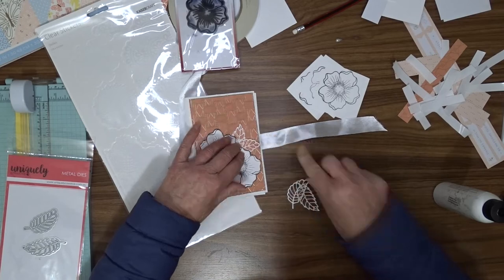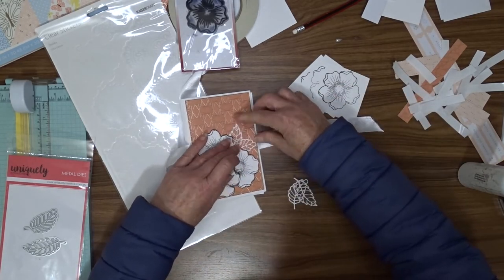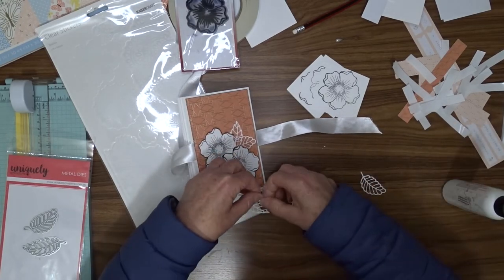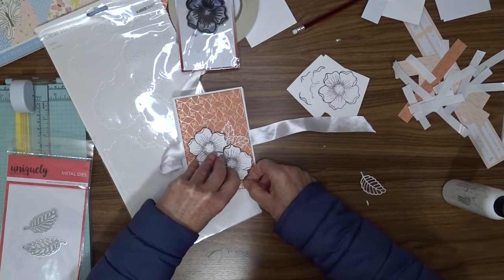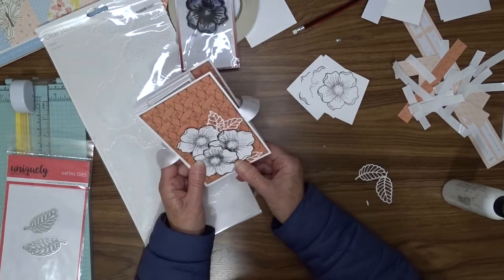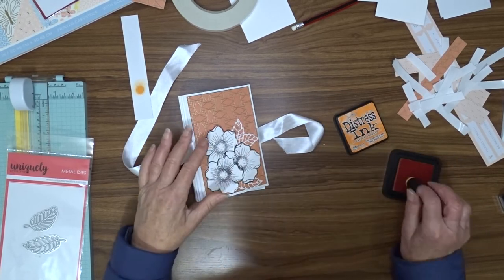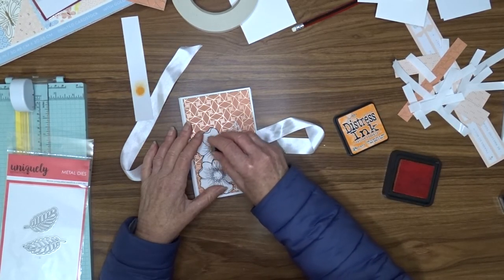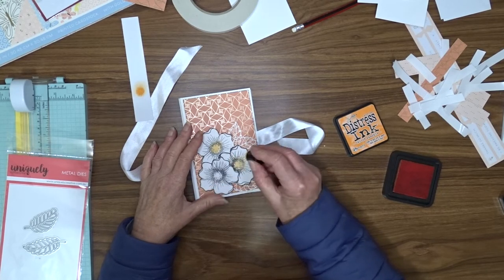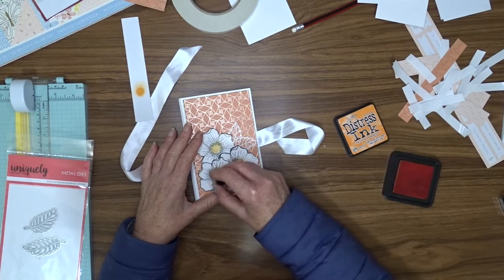Now I'm going to attach these to the front of my card. Of course I've fussy cut them, I don't have the die that goes with this stamp, I don't even know if there is one, but I'll put a link to the stamp and the die for the leaves in the description box if you're interested in having a look at those. I'm just using glue to attach these. I don't want too much dimension on the front of this card because it would interfere with my ribbon closure. Just as a little extra touch, I'm using a finger dobber to add some carved pumpkin distress ink to the centres of the flowers.